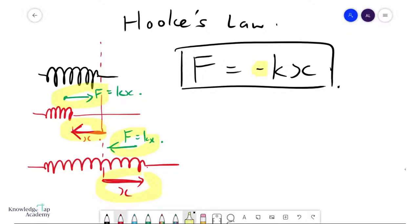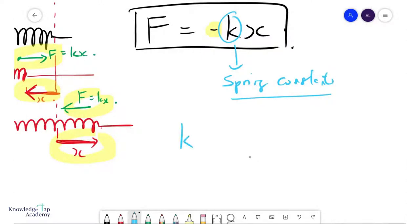Now, k is known as the spring constant. You can think of it as a measure of how elastic something is. So if I rearrange this formula slightly, we can see that k can be expressed, or at least the magnitude of k can be expressed as F over x.